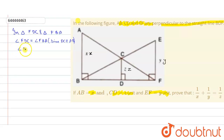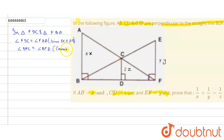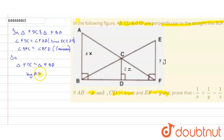Also, angle DFC equals angle BFA, which is a common angle. Therefore, triangle FDC is similar to triangle FBA by Angle-Angle-Angle similarity.